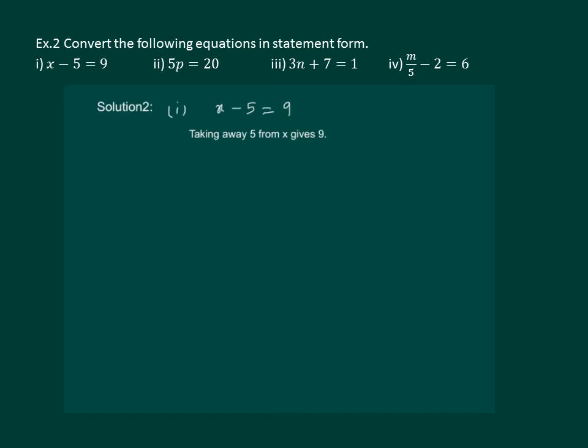Let us take the second part. 5p is equal to 20. This can be written as: 5 times the number p is 20.